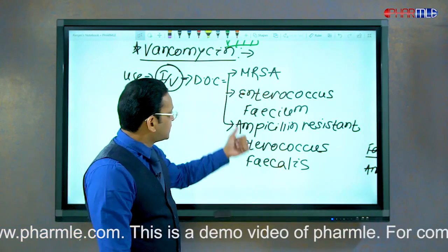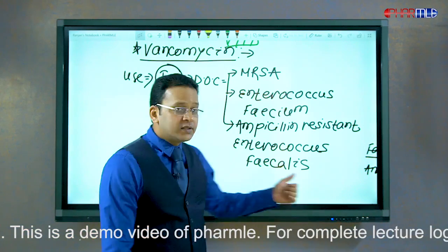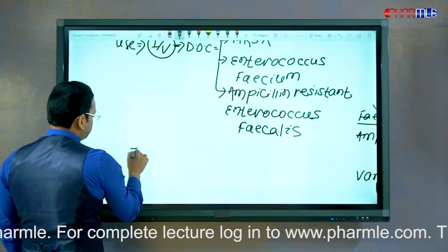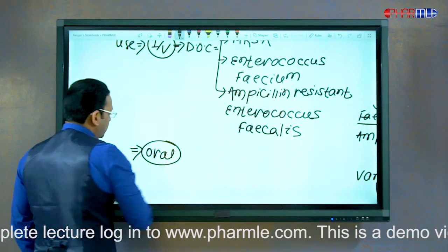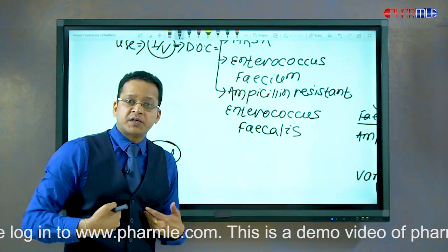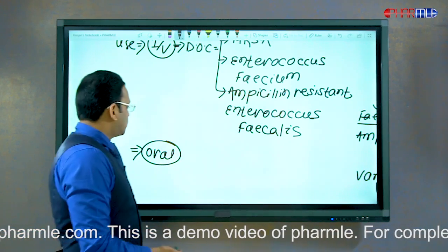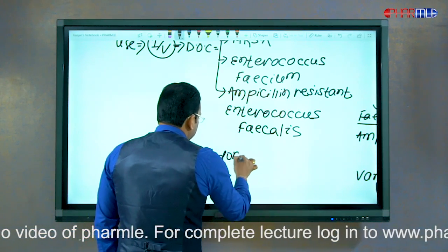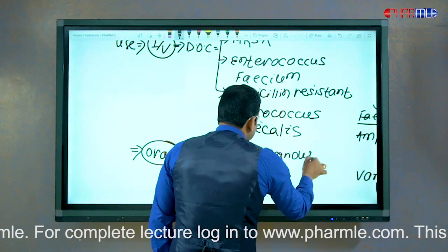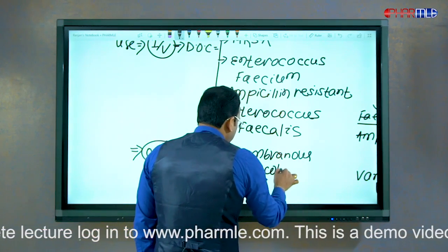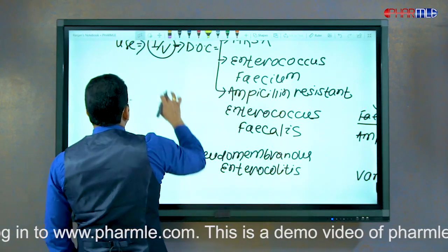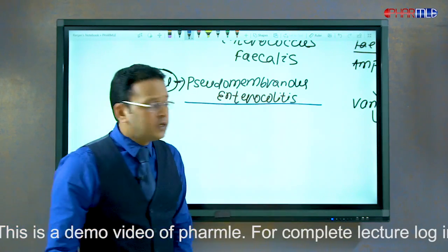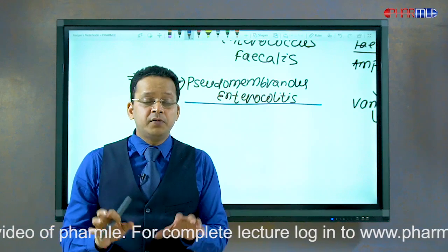Intravenous vancomycin is drug of choice for MRSA, Enterococcus faecium, and ampicillin-resistant Enterococcus faecalis for systemic infections. Although vancomycin has poor absorption, we can still give it by oral route, and it is justifiable only for treatment of infections of the gastrointestinal tract. Oral vancomycin is used for treatment of pseudomembranous enterocolitis, which is a very important exam topic.